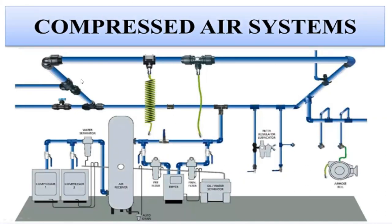This is the typical layout of a compressed air system — we typically call it a ring main system. We have two compressors pumping to the air receiver, then going to the dryer and oil-water separator, from which dry compressed air is fed to the ring main system. From there, compressed air is tapped from different points for different applications.